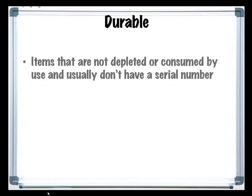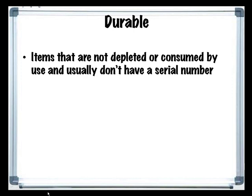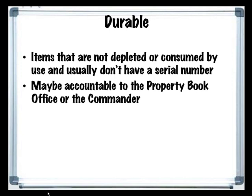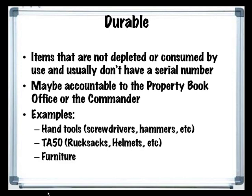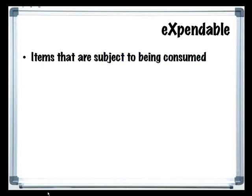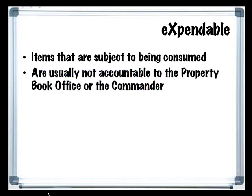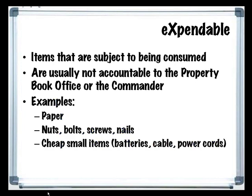Durable items are those which are not depleted or consumed by use and usually don't have a serial number associated with them. These items may be accountable to the PBO or the company commander. Some examples include hand tools such as screwdrivers or hand hammers, TA-50 such as rucksacks or K-pots, or furniture. Expendable items are items that are subject to being consumed by use. These items are not usually accountable by the PBO or the commander. Examples include paper, nuts, bolts, screws, nails, or cheap small items such as batteries, cables, or power cords.